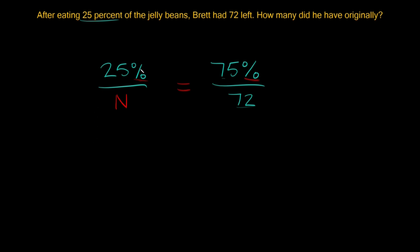So in order to change 25% into a decimal that's just gonna be 0.25. 25% as a decimal is 0.25 and that's gonna be over n and then we're gonna set that equal to this other proportion right here.